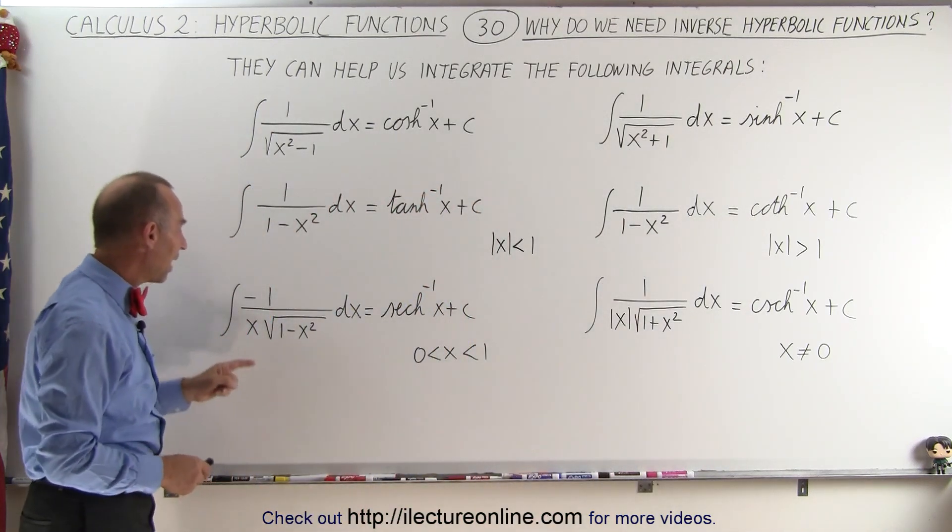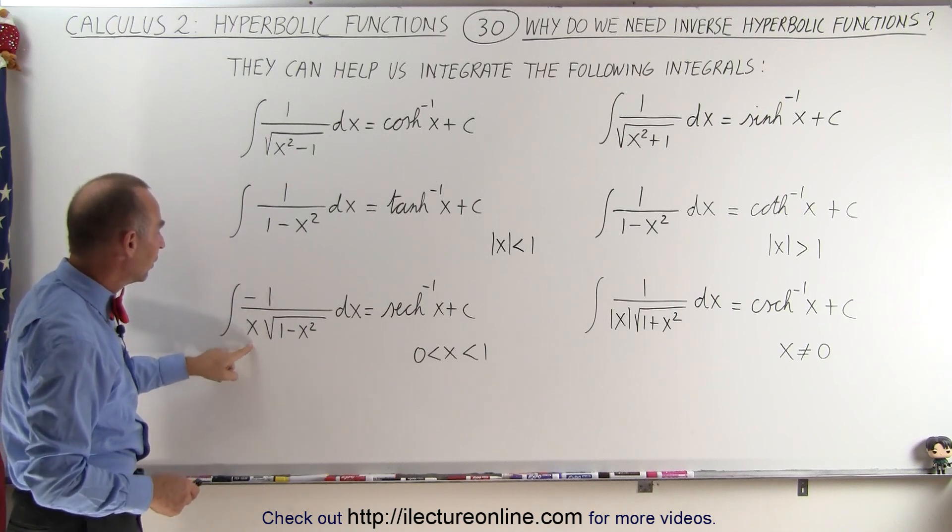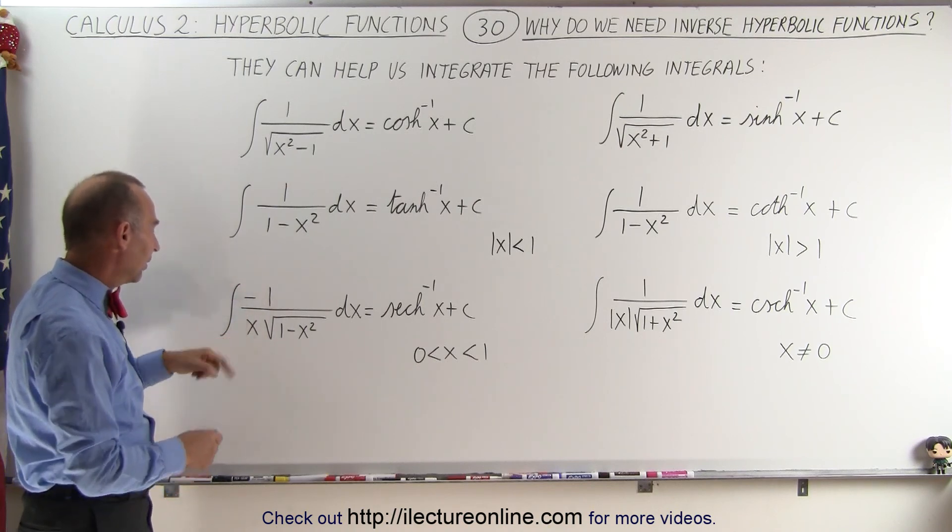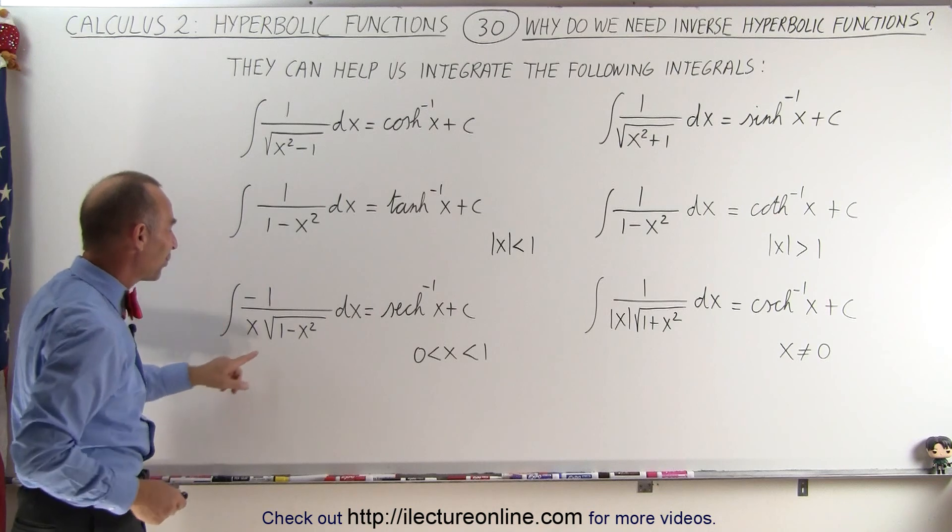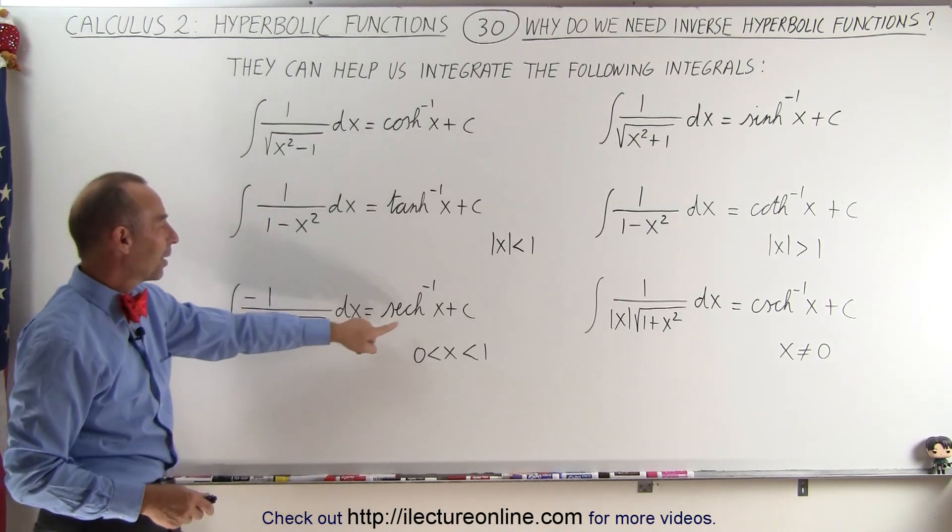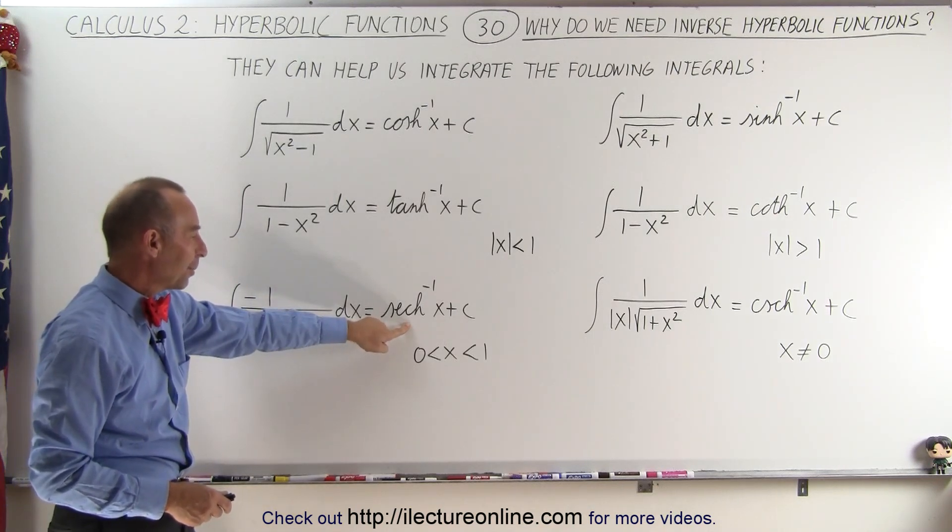And then notice we have also integrals for negative 1 over x times the square root of 1 minus x squared. That becomes the inverse hyperbolic cosecant.